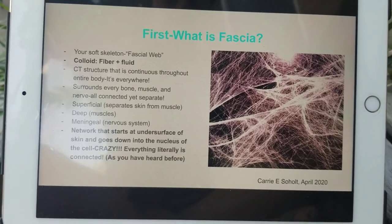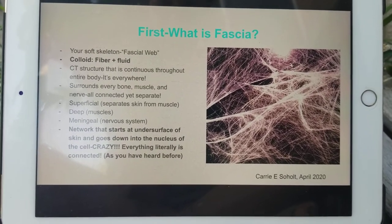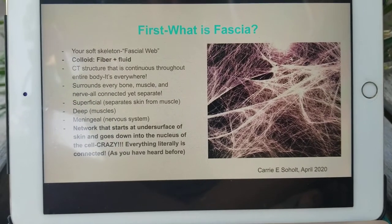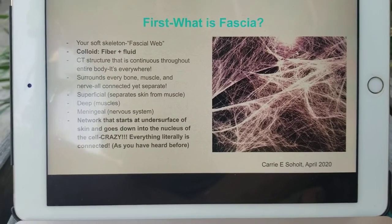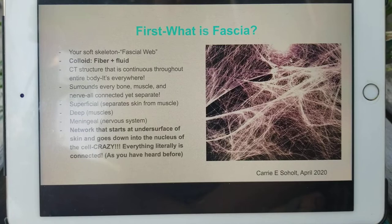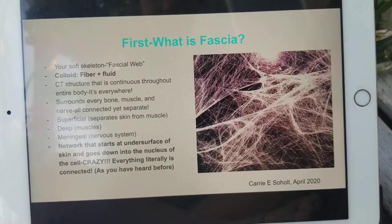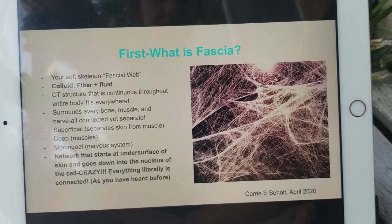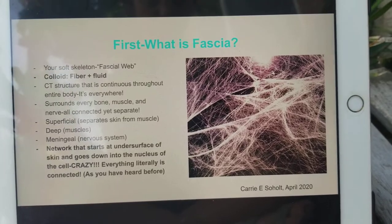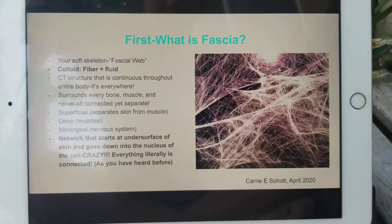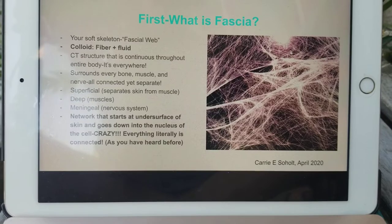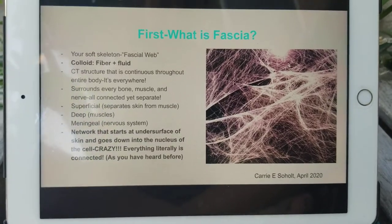There are three different types of fascia: superficial, deep, and meningeal. Superficial is the type of fascia that separates your skin from your muscles. Deep fascia is what surrounds your actual muscles, and meningeal is the type of fascia that surrounds your nervous system — specifically the nerves.